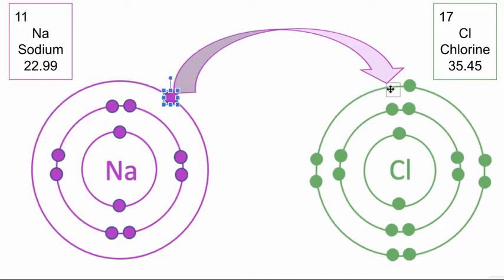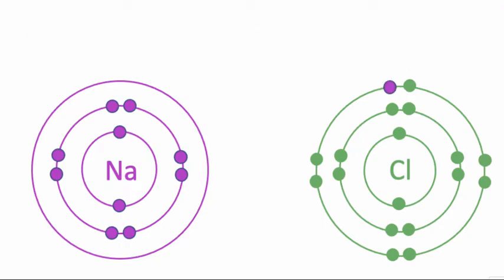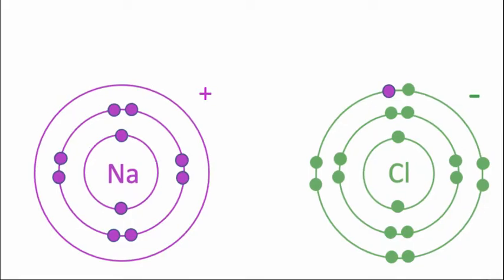When sodium donates an electron it becomes slightly positive because it has fewer negatively charged particles than it did have. In the same way chlorine becomes slightly more negative because now it has more negatively charged particles than it did have. Now we have two unlike charges, a positively charged atom and a negatively charged atom. We know that opposite charges attract. There is an electrostatic pull between them. It is that pull that we name the ionic bond.